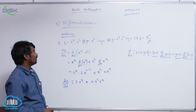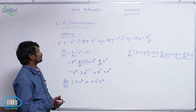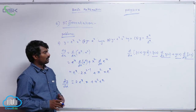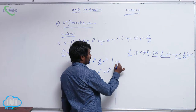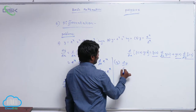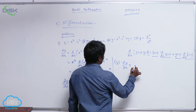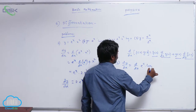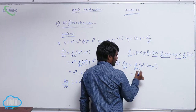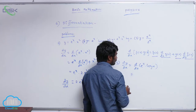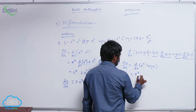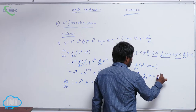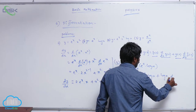Now for the third problem, dy by dx is equal to d by dx of e power x into log x. Again this is like f of x into g of x, so applying the product rule: e power x into d by dx of log x, plus log x into d by dx of e power x.